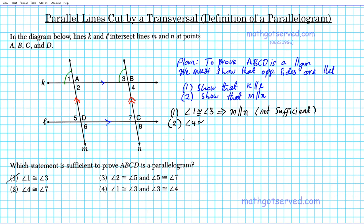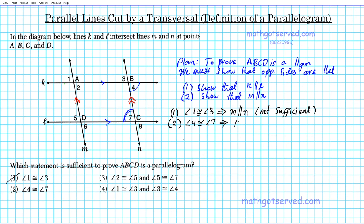Option two: angle 4 is congruent to angle 7. Angle 4 and angle 7 are alternate interior angles. If alternate interior angles are congruent, those lines are parallel. This shows that the horizontally-oriented lines K and L are parallel — that's only condition one. It's necessary but not sufficient; we need both conditions one and two to prove a parallelogram. So the answer is not option two either.